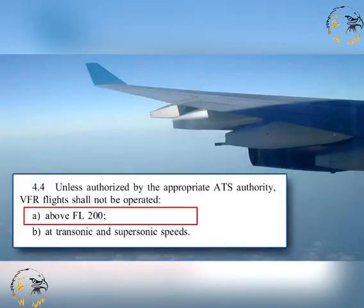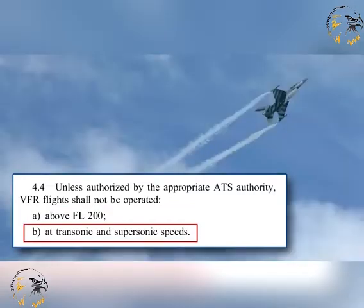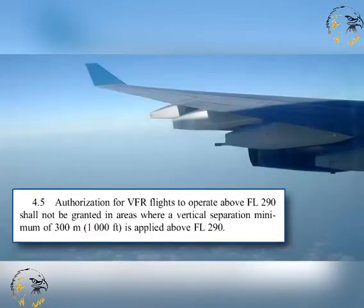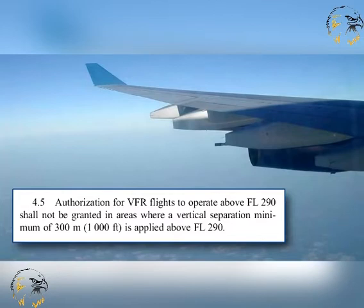Now let us look at how altitude or flight level affects the right to fly in accordance with the visual flight rules. Unless authorized by the appropriate air traffic services authority, VFR flights are not to take place above flight level 200. VFR flight may not be conducted at transonic or supersonic speeds at any level or altitude. Authorization will on no account be given for VFR flights to operate above flight level 290 in areas where a vertical separation minimum of 1,000 feet or 300 meters is in effect above that flight level.